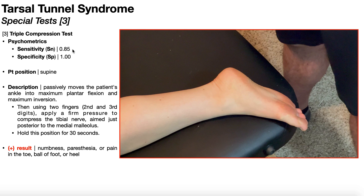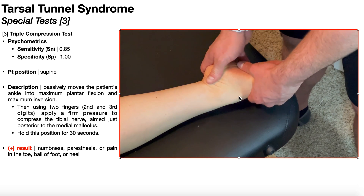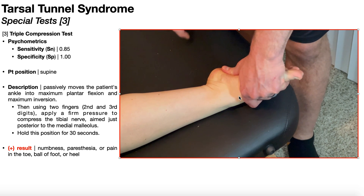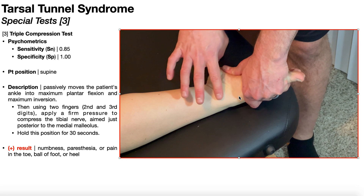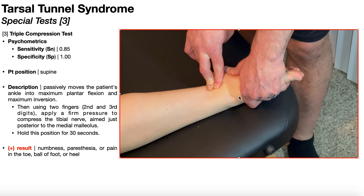The patient is positioned in supine with the leg externally rotated to expose the tarsal tunnel. To perform this test, the PT passively moves the patient's ankle into maximum plantar flexion and maximum subtalar inversion. Then, using two fingers — probably the second and third digits — find the medial malleolus and apply firm pressure behind it to compress the posterior tibial nerve.